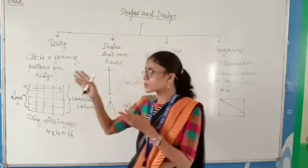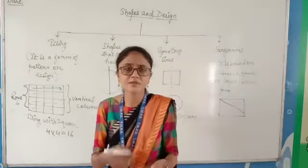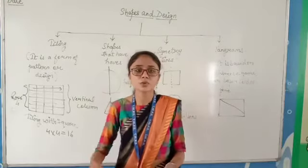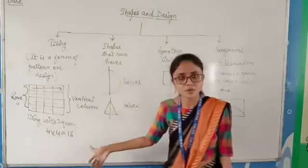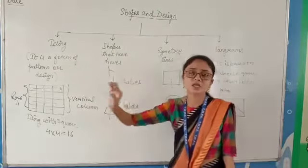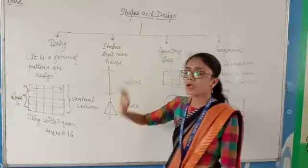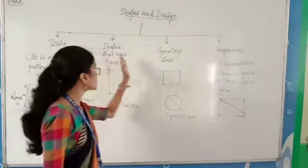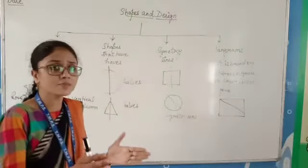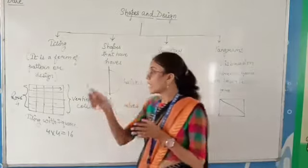This is the quick review of the previous part one, which I have explained in the live classes and in the video also. I hope this tiling topic is very much clear to you all. Now today we are going to study about shapes that have halves. Half means aadha — 50-50.